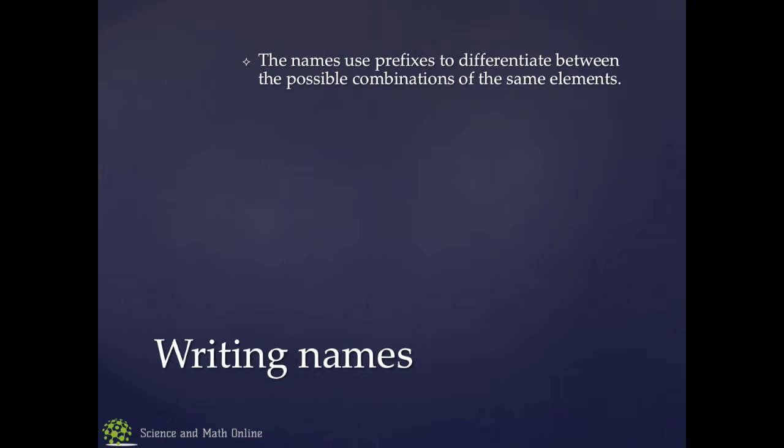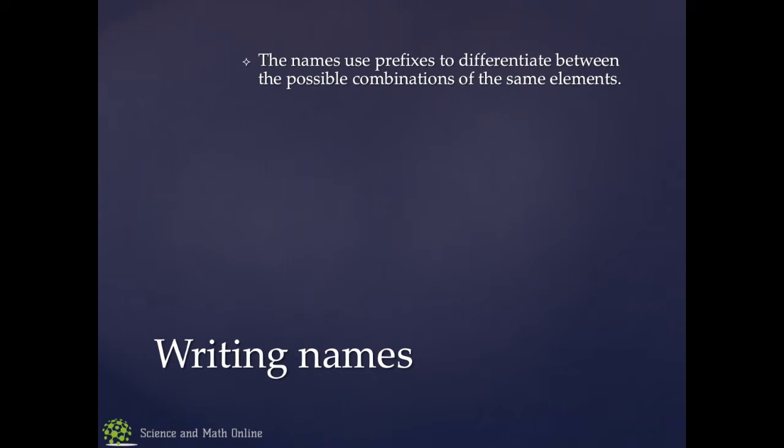First, the name uses the prefixes to differentiate between a possible combination. That's why we do this. For example, carbon and oxygen can form two different forms. Carbon monoxide, where I have one oxygen, and carbon dioxide, where I have two.